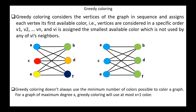Greedy coloring considers the vertices of the graph in sequence and assigns each vertex its first available color. Vertices are considered in a specific order V1, V2, ..., VN, and Vi is assigned the smallest available color not used by any of Vi's neighbors. For example, applying greedy coloring to the K3,3 bipartite graph may not yield the optimal result depending on the ordering, even though bipartite graphs need only two colors. This means greedy coloring does not always guarantee the optimal solution. For a graph of maximum degree X, greedy coloring will use at most X plus one colors.